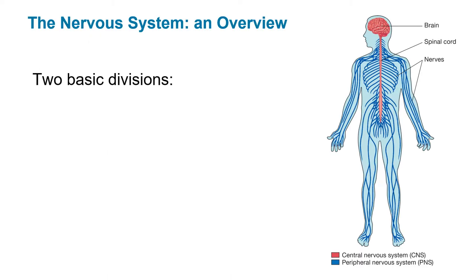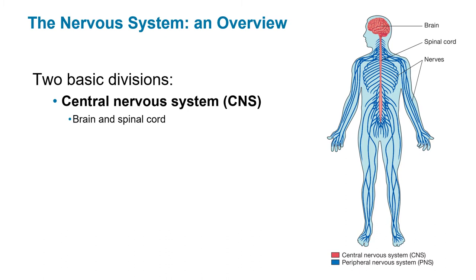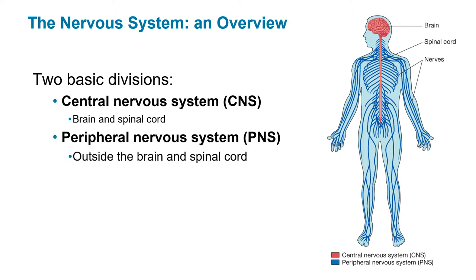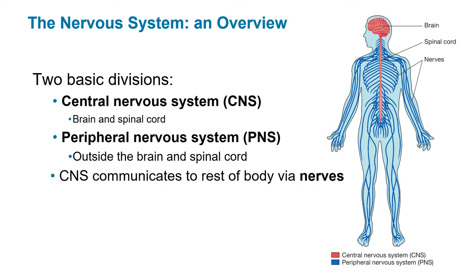Before anything else, we need to talk about the nervous system — this should be basic material from intro. There are two divisions: the central nervous system, which includes the brain and spinal cord, and the peripheral nervous system, which is everything outside of the brain and spinal cord. The central nervous system communicates to the rest of the body via nerves, and this communication is a two-way street.